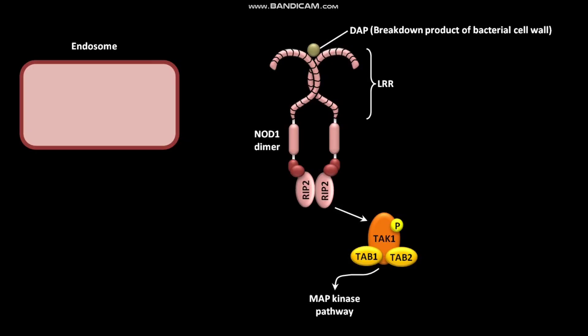The MAP kinase pathway then leads to the formation of active AP1 transcription factor. The RIP2-bound TAK1/TAB1/TAB2 complex also activates the NEMO IKK complex. Through the activation of the NEMO IKK complex, the RIP2-bound TAK1/TAB1/TAB2 complex initiates the NF-κB activation pathway, which then produces active NF-κB.